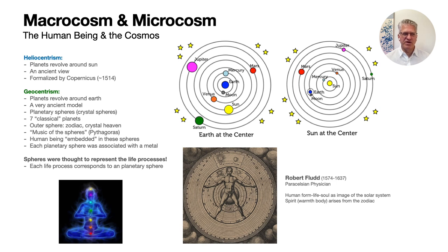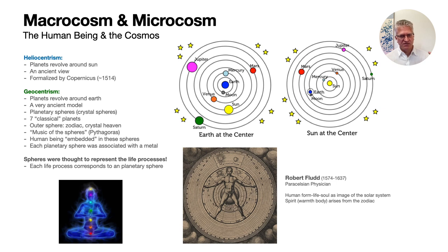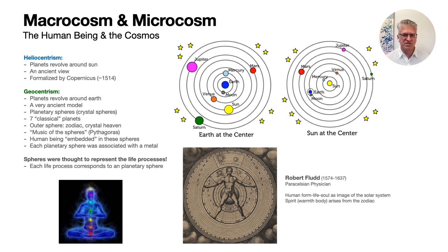These planetary spheres and their vibrations were thought to be carried in the physical earthly arena through different metals. Saturn was associated with lead, Mars with iron, and the sun with gold, and these were all made into remedies in various preparations. We think of lead as a toxin today, but in extremely dilute concentrations there's some evidence that lead, for example, can stimulate different formative forces - especially hardening or structuring activities within the cell - at non-toxic levels.